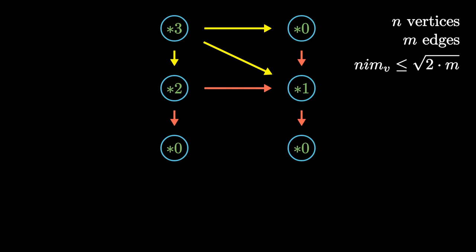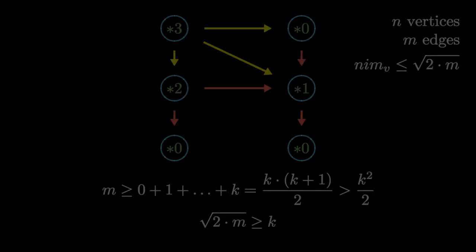So the number of edges in the graph isn't less than 0, plus 1, plus 2, plus etc, plus k, which is k multiplied by k plus 1 divided by 2, which is bigger than k squared divided by 2. If we move the 2 to the other side and take the square root of the inequality, we'll get that if there is a vertex with a nimber k, then k isn't bigger than square root of 2m, which is exactly what we needed to prove.